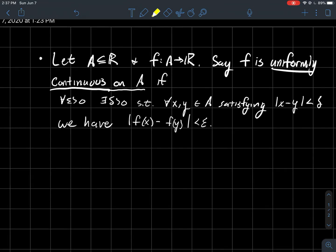So for every epsilon, there should exist a delta that's positive, such that for all x and y in your domain, such that they are within delta of each other, then the outputs should be within epsilon of each other.